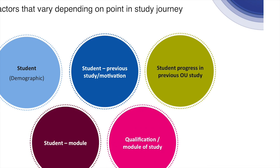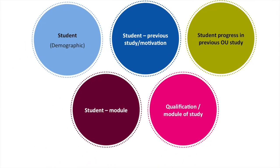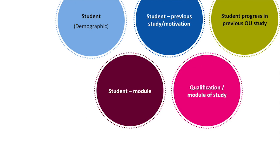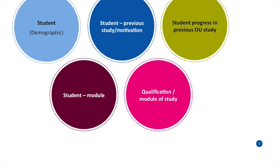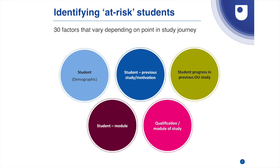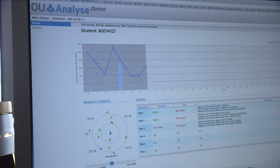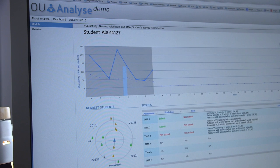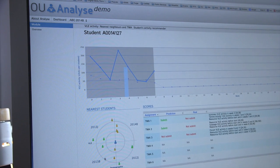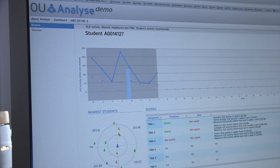The number of modules that a student takes actually affects their progression, and what qualification within that module as well. There are more than 30 factors that underpin this — factors that we know create the picture for the Open University of what a successful student looks like. So we can basically tell whether a student is going to pass or fail at key points within the module they're studying.